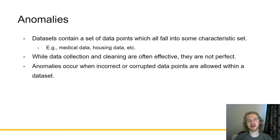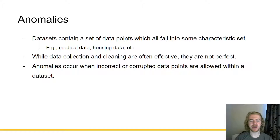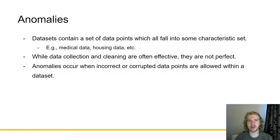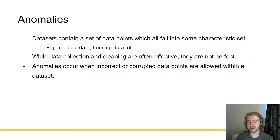Let's begin by talking about anomalies. Datasets contain a set of data points which all fall into some characteristic set. For example, you have medical data, housing data, etc. So all of these will fall into some characteristic set. All of the houses will be houses. All of the medical data will be on whatever medical data it is. It's all characteristic.